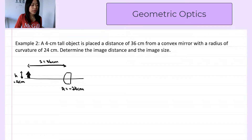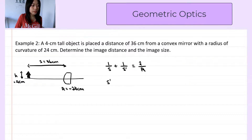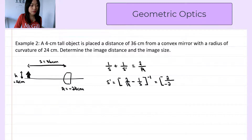To find the image distance, we use the mirror equation: 1 over the object distance plus 1 over image distance s prime equals 2 over the radius of curvature. Solving for s prime: it equals the inverse of (2/r minus 1/s). Substituting: r = −24 cm and s = +36 cm. We get s prime = −9 cm.